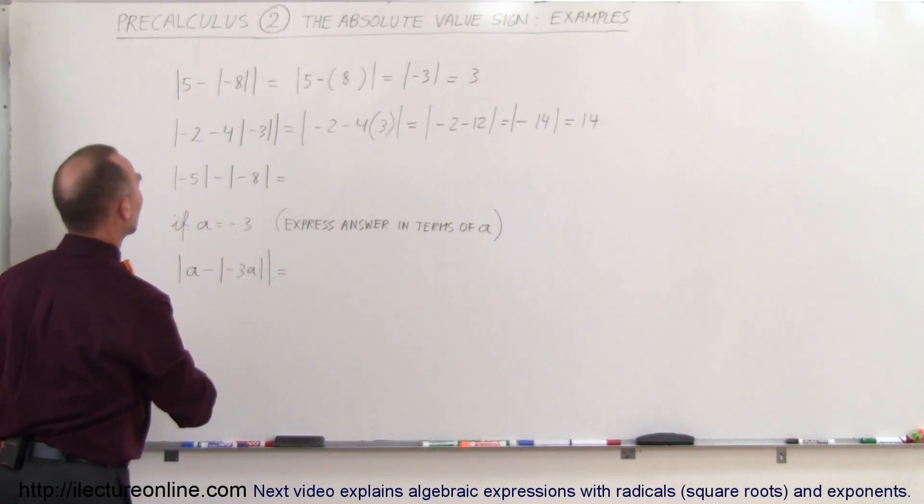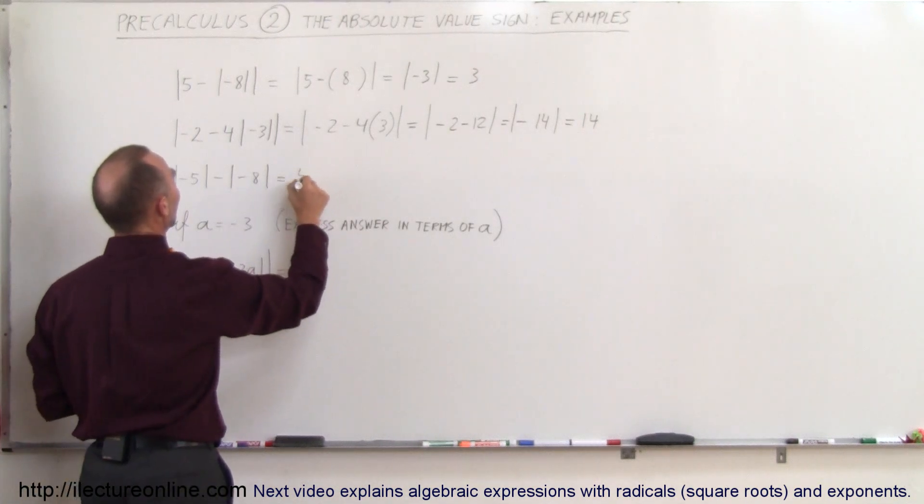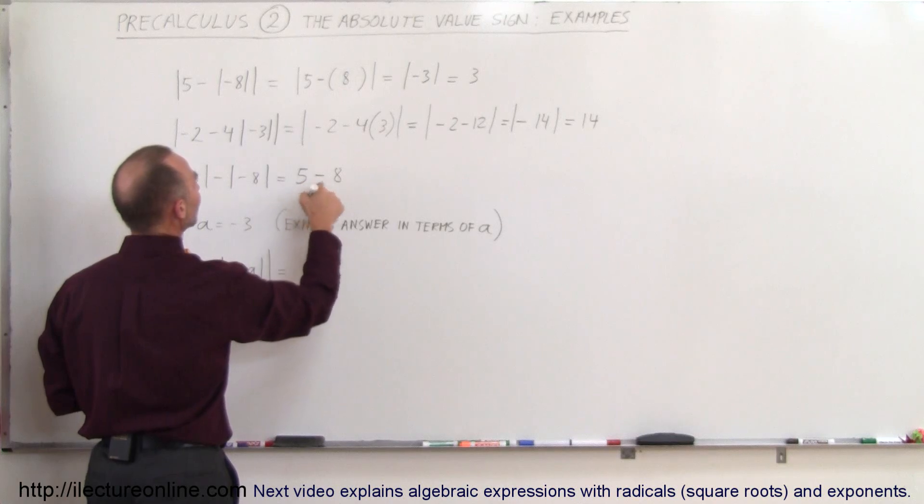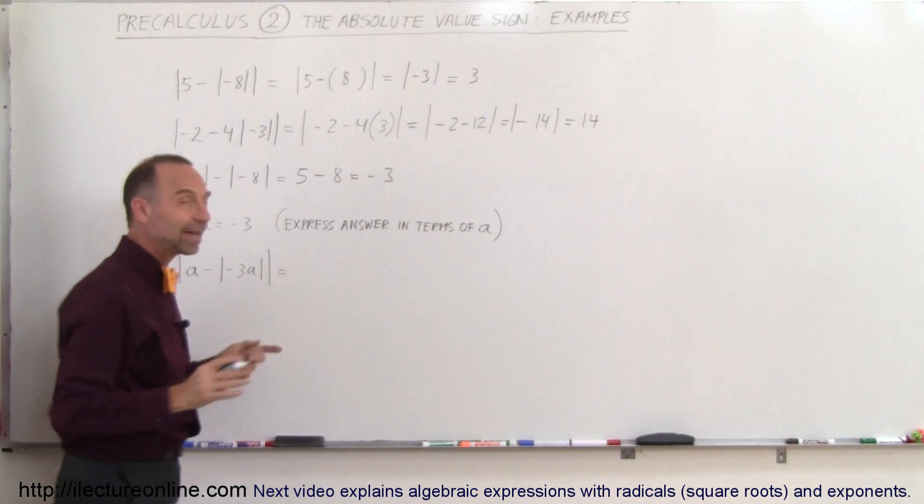Right here, you want to work these out first. So the absolute value of minus 5 is 5, minus the absolute value of minus 8 is 8, and so 5 minus 8 becomes minus 3.